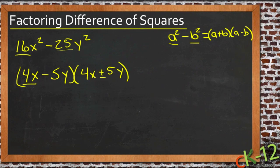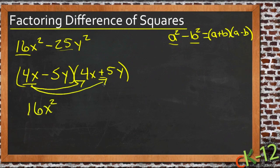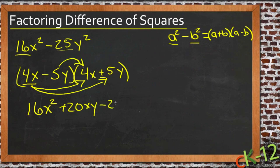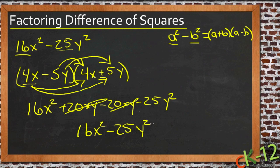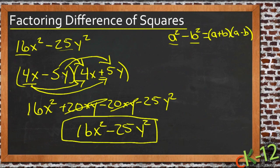Let's go ahead and fill that out to verify. 4x times 4x is 16x squared. 4x times 5y is plus 20xy. Negative 5y times 4x is minus 20xy, and negative 5y times 5y is negative 25y squared. Those middle two terms cancel — positive and negative — so we're left with 16x squared minus 25y squared. So our factored form is (4x minus 5y) times (4x plus 5y).